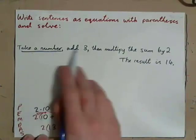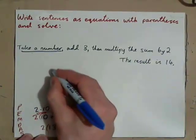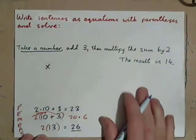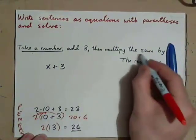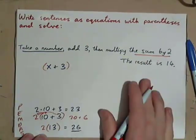Take a number, add 3, then multiply the sum by 2. The result is 14. Here's a number, x. Take a number, add 3. Multiply this sum by 2. You need to put parentheses around the sum, and then multiply by 2.